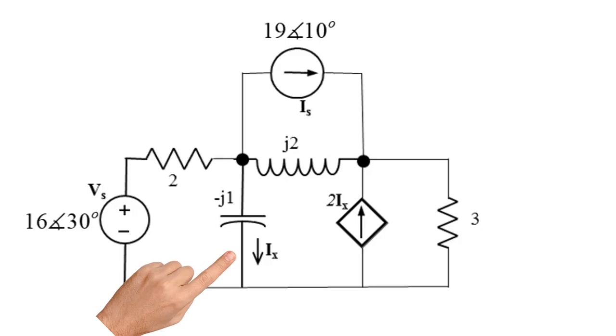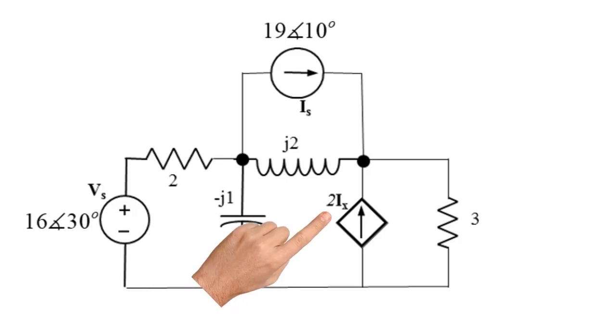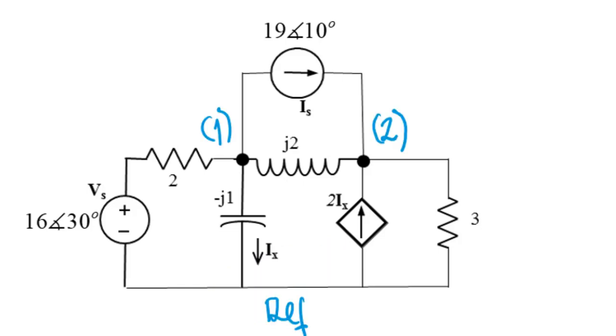In this circuit they ask us what is the RMS value of the current in the capacitor ix, which happens to be the controlling current to the dependent source. They're also asking us what is the complex power delivered by that dependent current source.